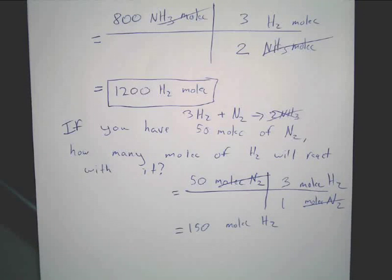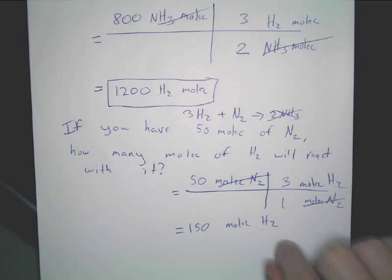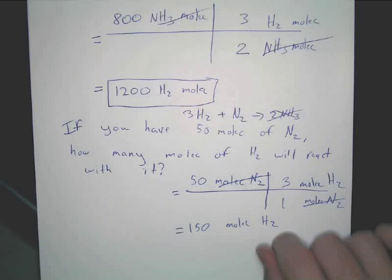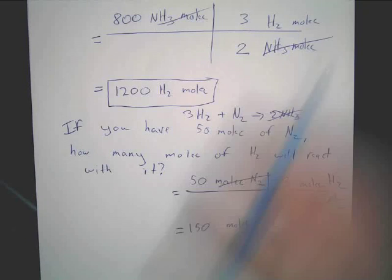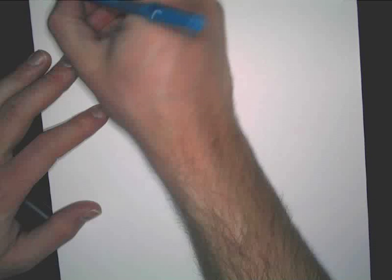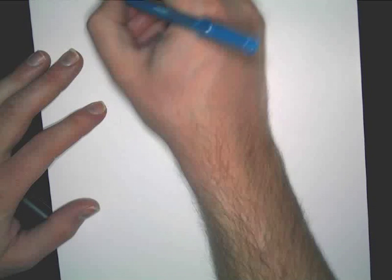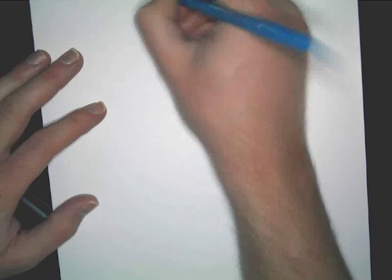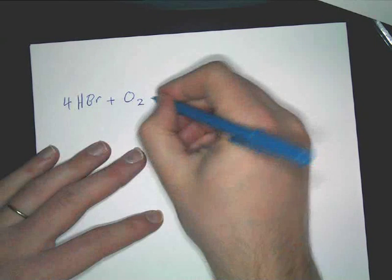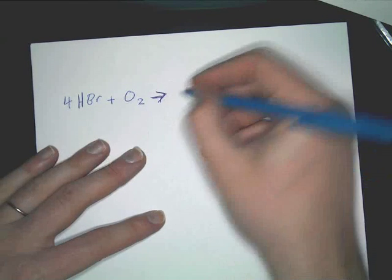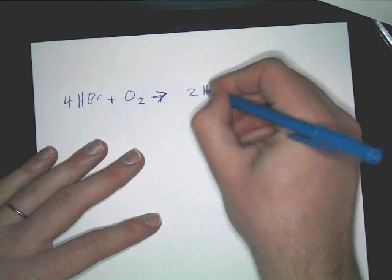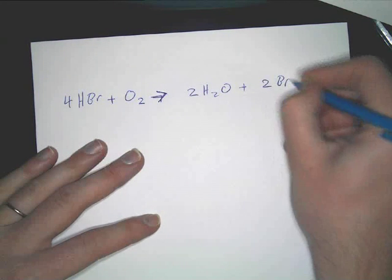Let me show you one other one. This is using molecules. Now we can do the same thing using moles as well. It doesn't change anything except you write moles instead of molecules. So let me show you one other type of question here. So let's look at this reaction. I'd like you to write it out too. We've got four HBr plus O2 yields 2 H2O plus 2 Br2. So there's your reaction.